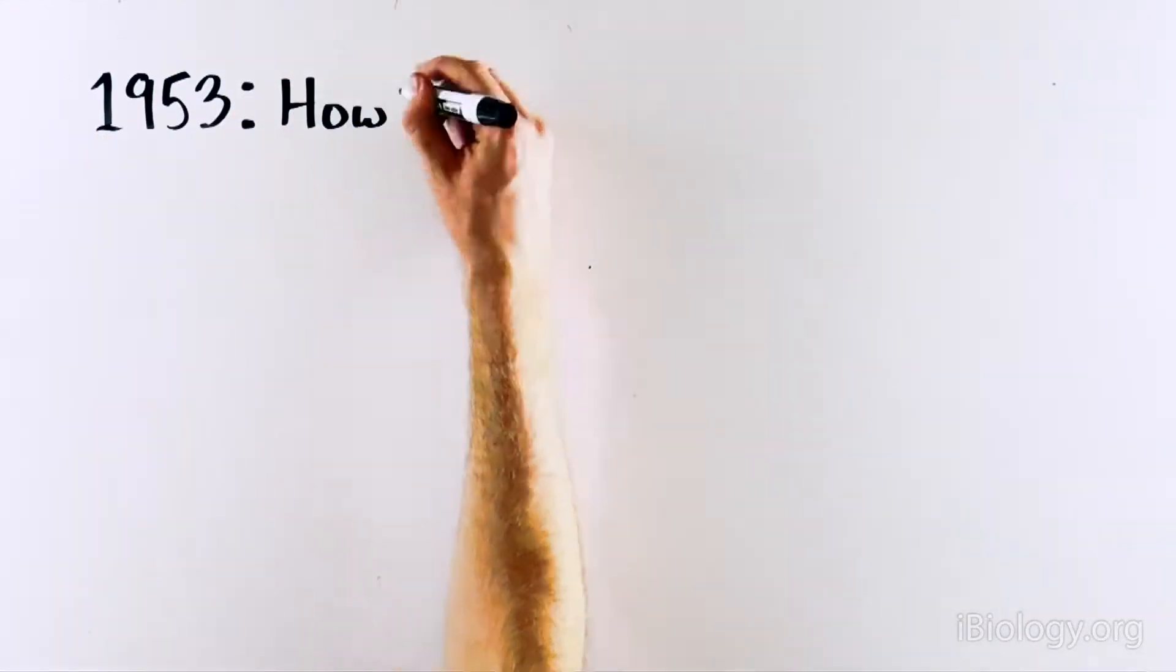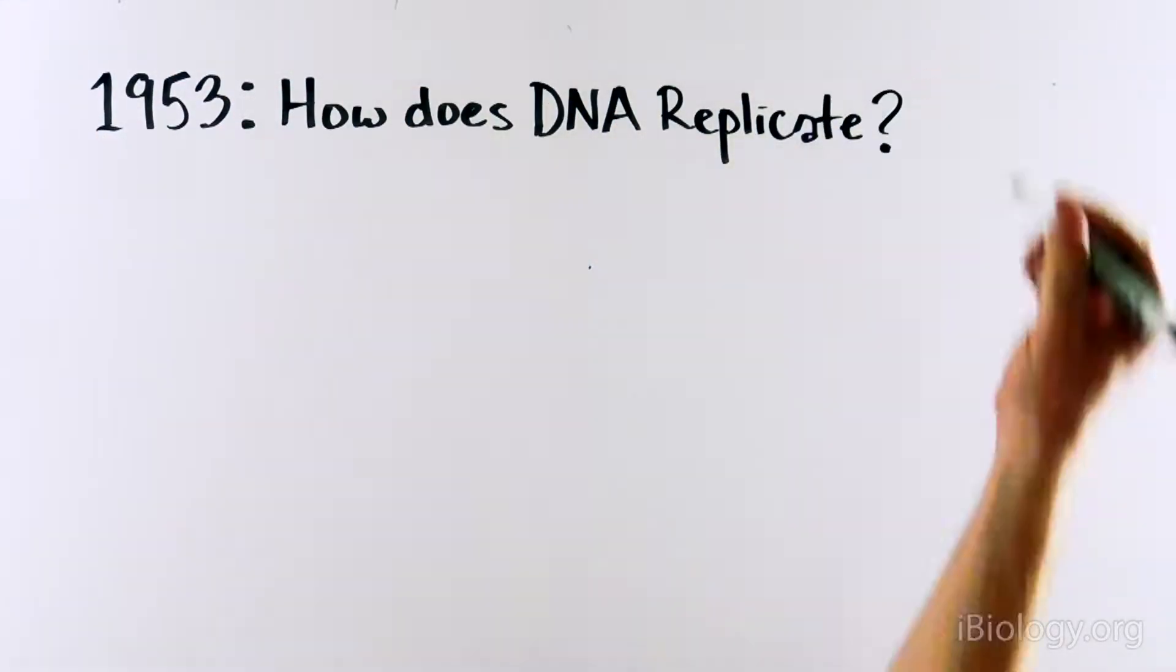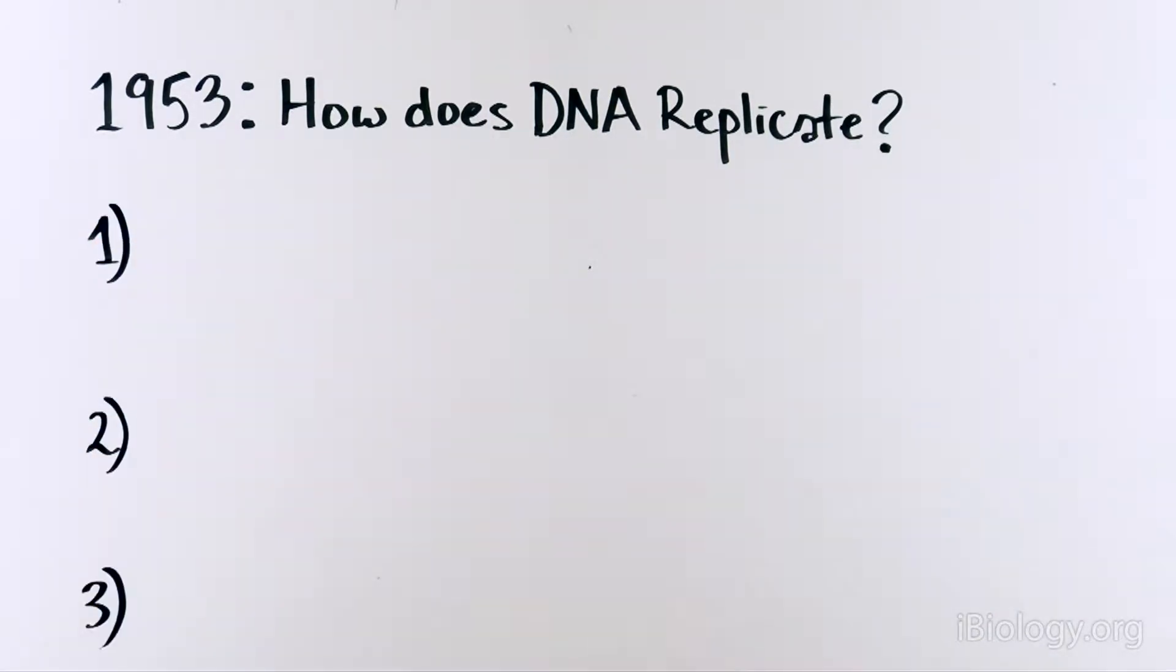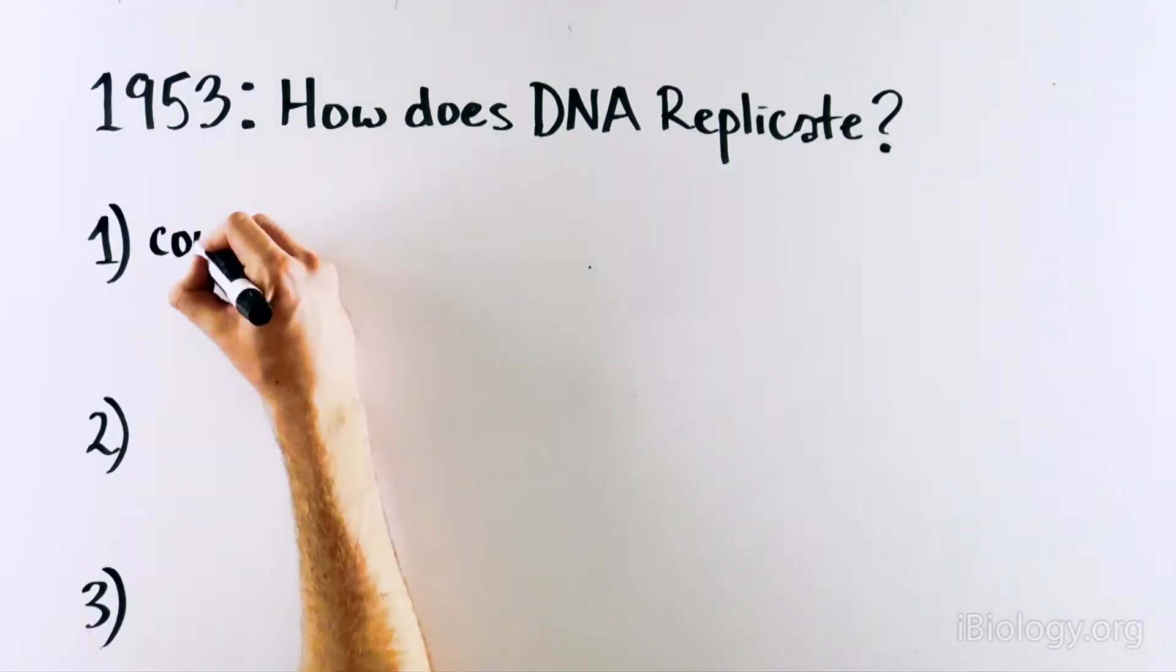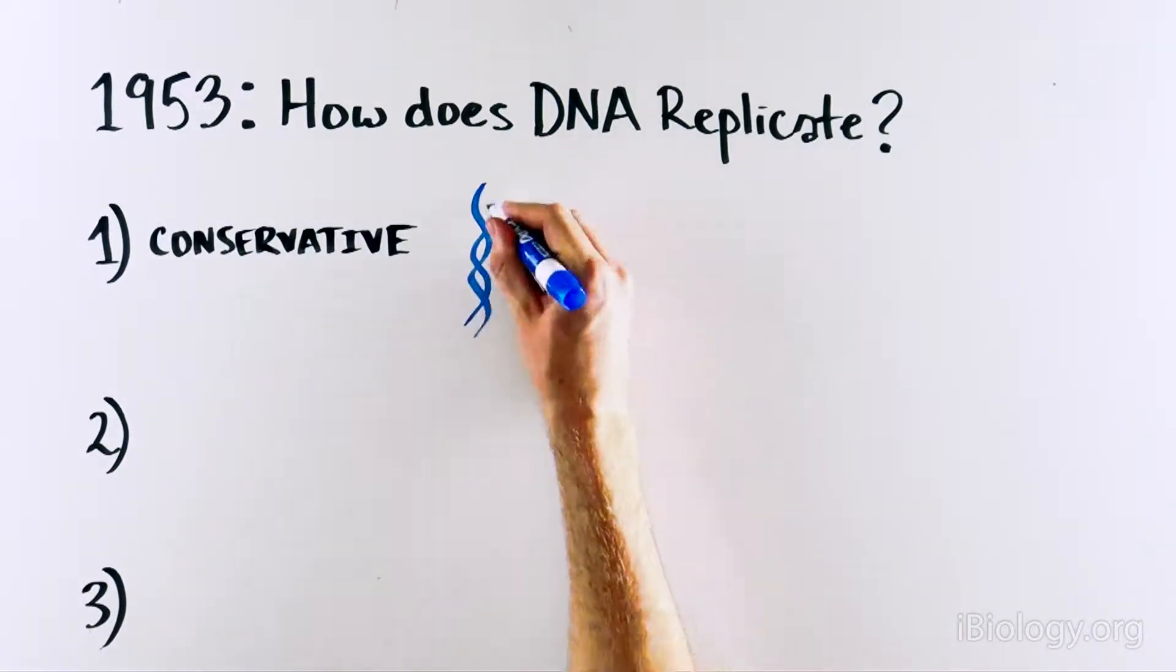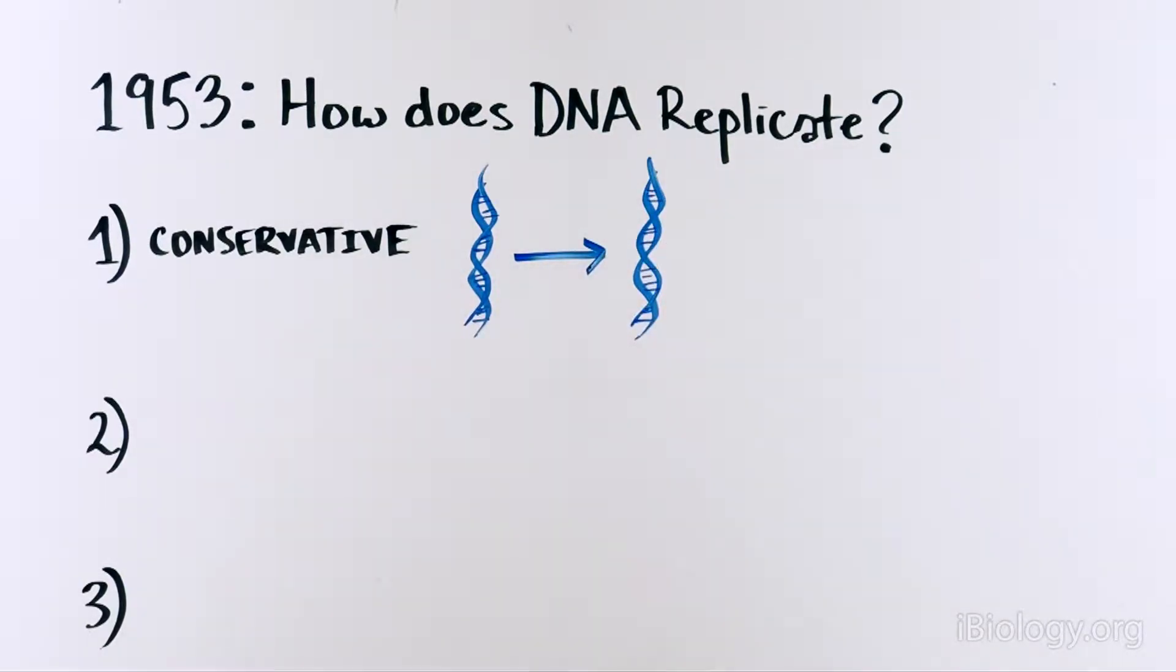However, the question lingered: how does DNA replicate? There were a few theories, three actually. One of them was conservative replication, where a DNA molecule would get copied and make a second new red DNA molecule.